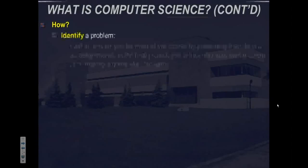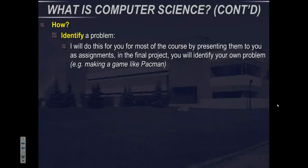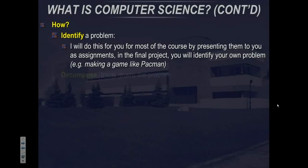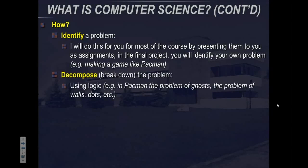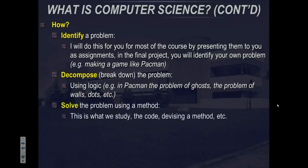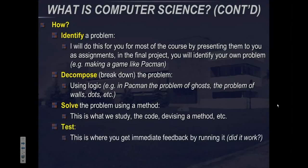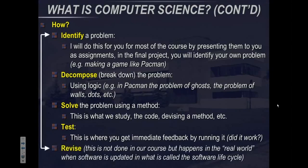So how do we do that? First, we've got to figure out what the problem is. For most courses, this is presented in the form of assignments. In larger projects — like final projects — you identify your own problem, for example making a Pac-Man game. Then you decompose it, or break it down using logic — figuring out where all the pieces of the problem are. You solve the problem in a methodological way: that's what we study, the code, how to work the method. Then you test it and get feedback. You run it; if it works, great; if it doesn't, you try again and go back to the first step to revise. This is a mixture of the theoretical and the practical.